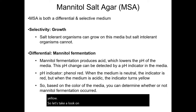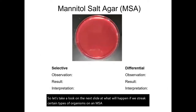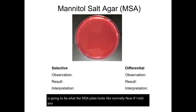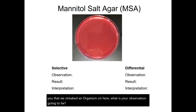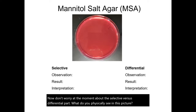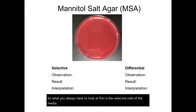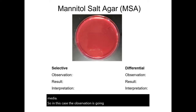Let's take a look at what happens when we streak certain organisms on an MSA plate. This first plate is what MSA looks like normally. If we streaked an organism here and you see absolutely nothing — there is no growth — you always have to look at the selective side of the media first. In this case, the observation is no growth.